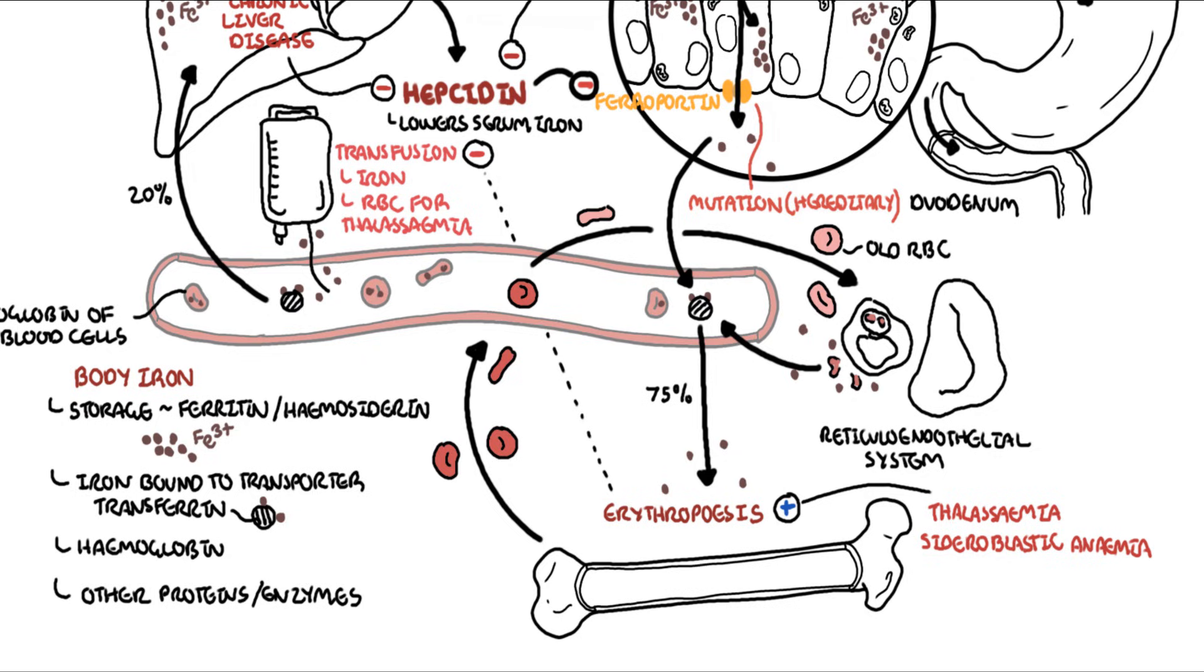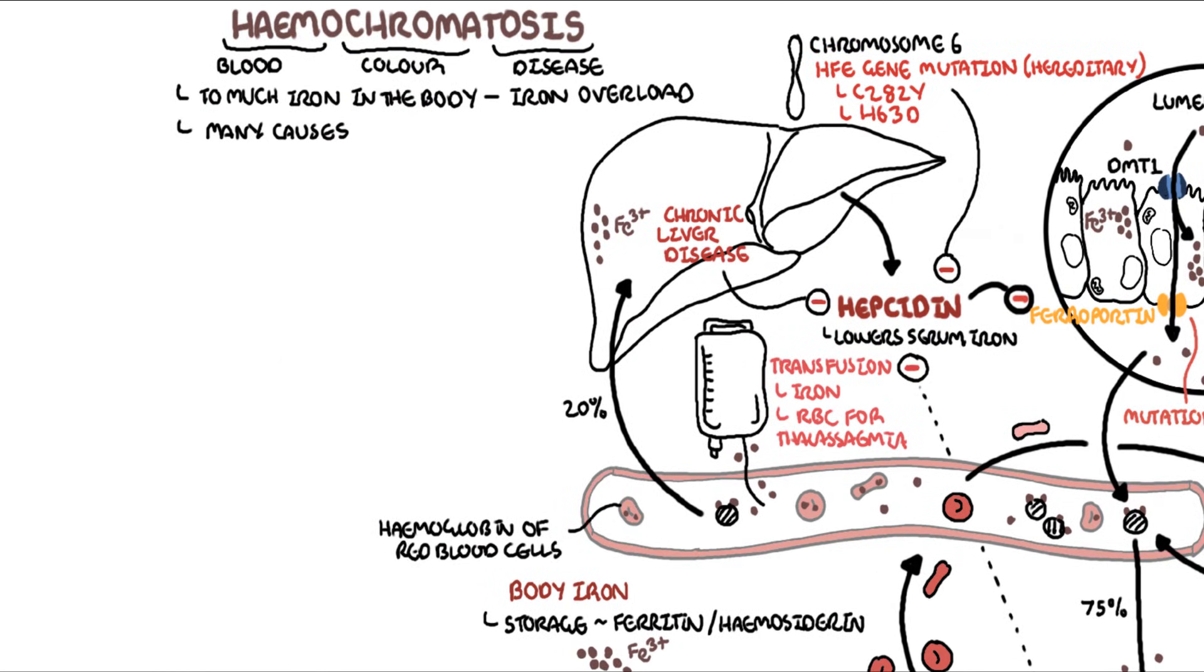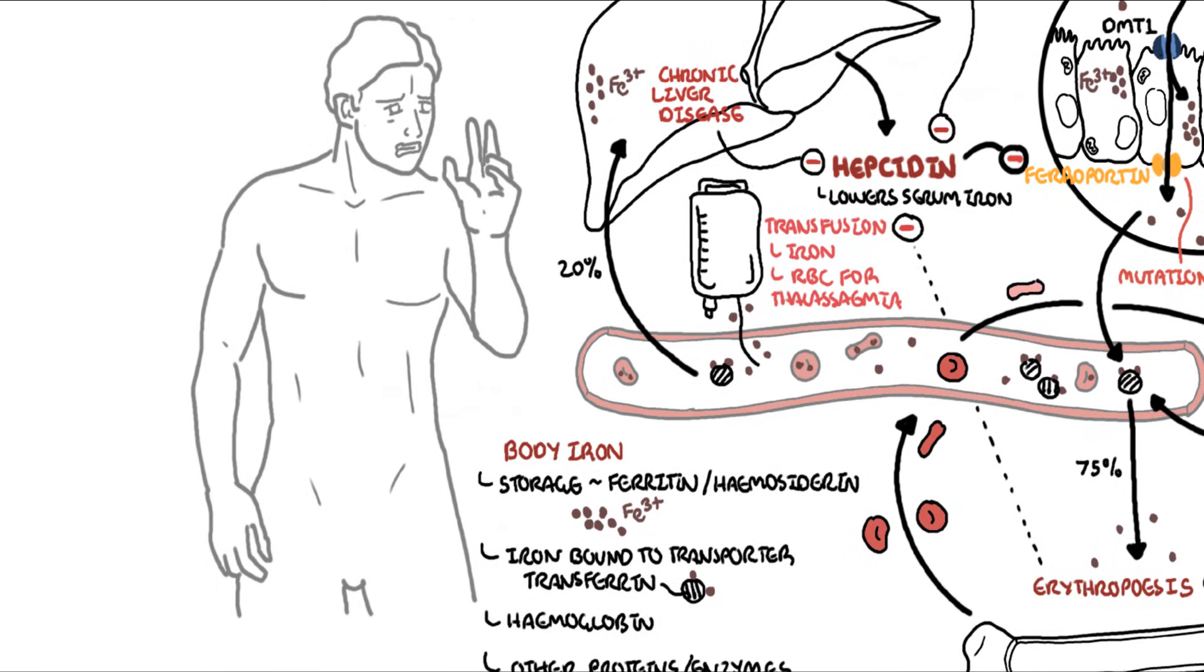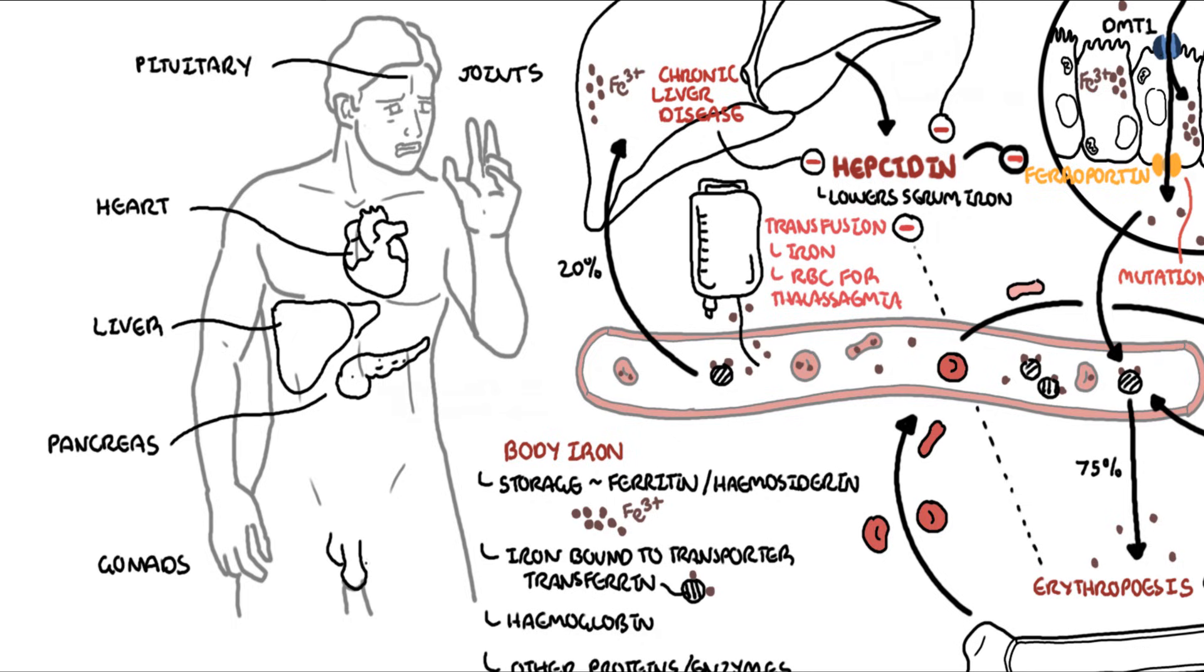We looked at the different causes of iron overload. Now when you have so much iron in circulation, the plasma iron binding protein, the transporter called transferrin, becomes saturated. When this happens, iron begins binding to other things such as albumin, citrate, acetate. This iron is referred to as non-transferrin bound iron. When this happens, cells will take up this non-transferrin bound iron into the liver, the heart, the pituitary glands, the joints, the pancreas, as well as the gonads.